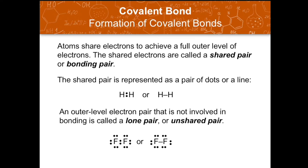We have six other elements that exist as diatomic elements: nitrogen, oxygen, fluorine, chlorine, bromine, and iodine. For example, fluorine is another diatomic element, and as you can see, there are electrons which are not involved in bonding. These electrons are called a lone pair or unshared pair.